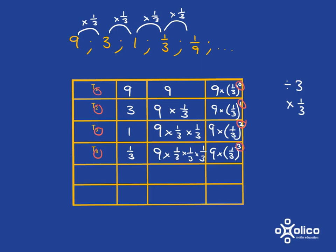And so that helps us see quite easily that for term n, we're going to have 9 multiplied by 1/3 to the power of n minus one. And let me write that nice and big there. It's Tn is going to be 9 multiplied by 1/3 to the power of n minus one.